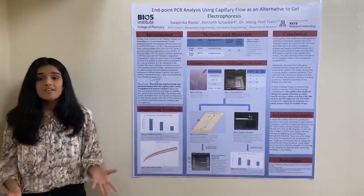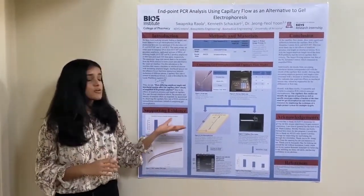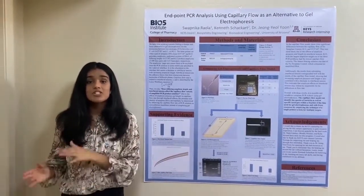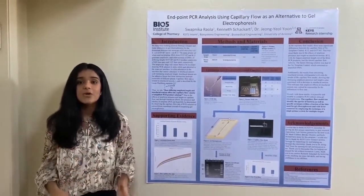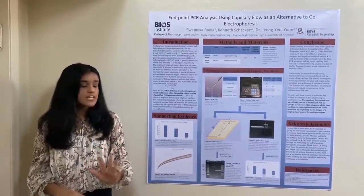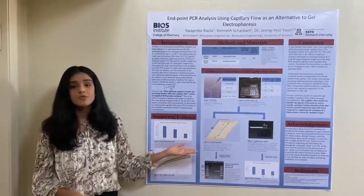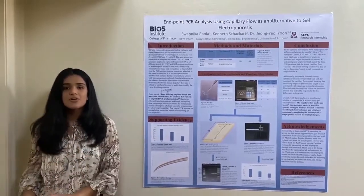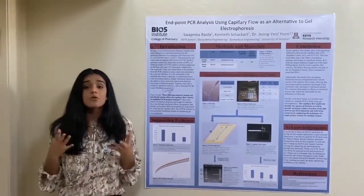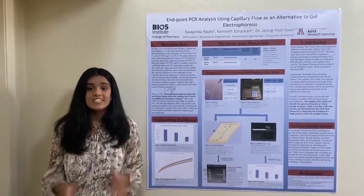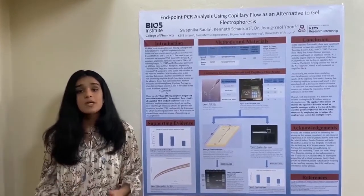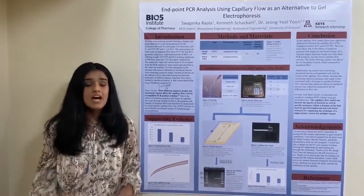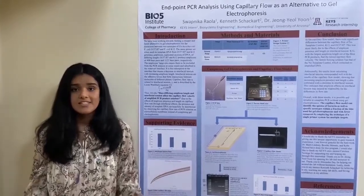We believe that with this, our capillary flow model is likely a dependable alternative to gel electrophoresis, as it is just as accurate, but it only requires five minutes to complete versus gel electrophoresis' two hours. This quickness combined with its cheaper materials creates a much more accessible DNA identification model. This is really important in places like Arizona, where we have seen numerous outbreaks of E. coli in the past.